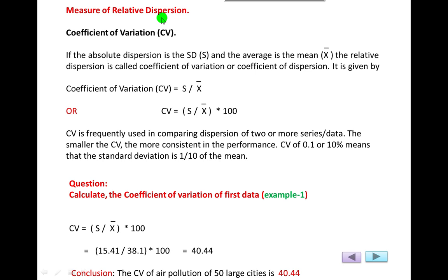There are different methods to measure relative dispersion, but only the coefficient of variation is included in your syllabus. Coefficient of variation is frequently used in comparing dispersion of two or more series or data. The smaller the CV, the more consistent the performance. Smaller coefficient of variation means less dispersion, less variation — and less dispersion or variation means more consistent.